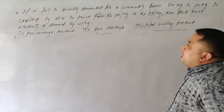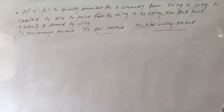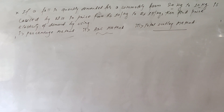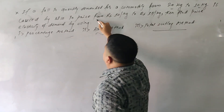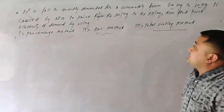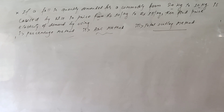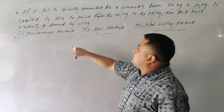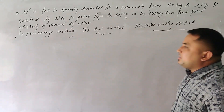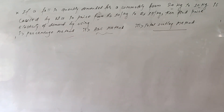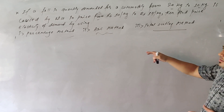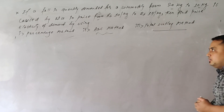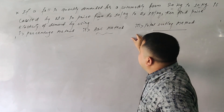If a fall in quantity demanded for a commodity from 20 kg to 10 kg is caused by a rising price from 10 rupees per kg to 15 rupees per kg, then we need to calculate price elasticity of demand using the percentage method, the second method, and the total outlay or total expenditure method.